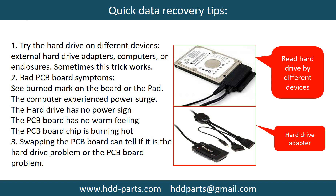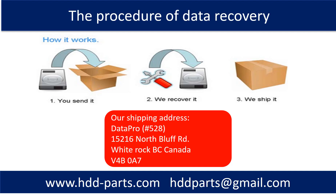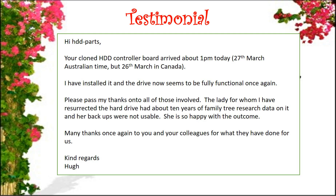There are some simple ways to recover data from a hard drive. One of them is to try to read the hard drive by different devices, like different external hard drive adapters, computers, or enclosures, because different devices use different ways to read a hard drive — sometimes this trick works. Another way is swapping the hard drive PCB board, which can fix problems caused by the PCB board. There is a cost in swapping the PCB board, but it is way cheaper than sending the hard drive to a data recovery firm. This picture shows the procedure of how we do data recovery for our clients: first, the client sends their hard drive to us; second, we do data recovery; third, we ship back the data to our clients.